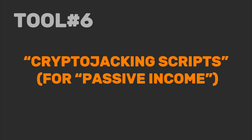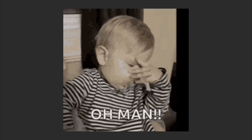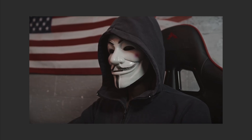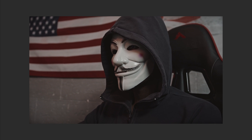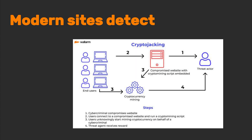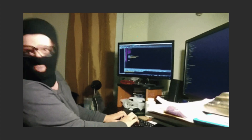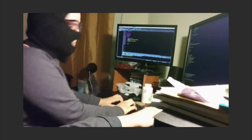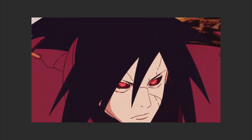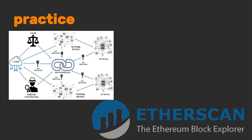Tool number six: crypto jacking scripts for passive income. Crypto jacking scripts — the MLM schemes of hacking. 'Just run this script and earn $10,000 a day in Monero.' These scripts, often pulled from GitHub repos last updated in 2017, promise easy money but mostly fry your CPU and get you blacklisted by Cloudflare. Modern sites detect crypto jacking faster than you can say 'CPU usage at 100%'. Even if you succeed, mining rewards are lower than the electric bill. Instead, learn smart contract auditing — tools like Slither or MythX find flaws in DeFi apps. Practice blockchain forensics with Etherscan plus Tenderly. And if you really want to mine, buy an ASIC, or just accept that your GPU is for gaming, not bankruptcy.